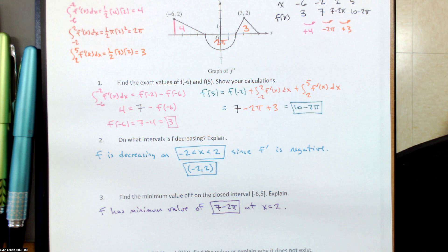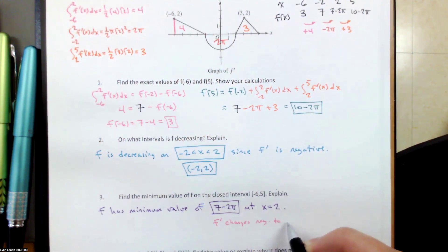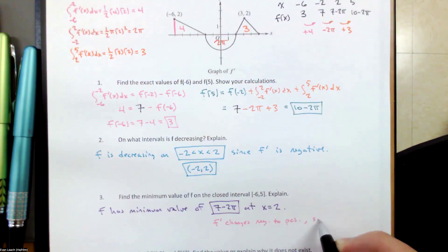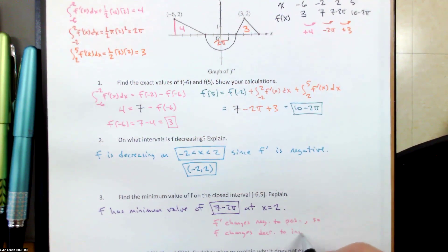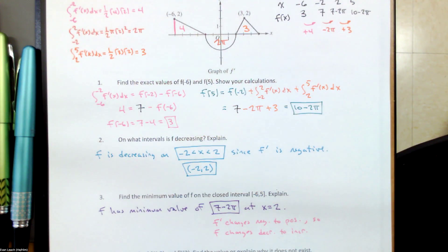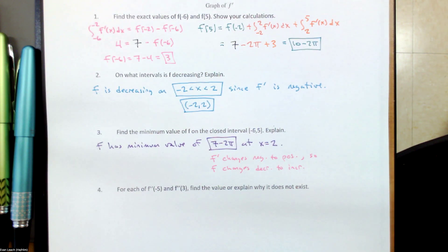At x equals 2, 2 is where the minimum happens, 7 minus 2π is the minimum value of the function. This is the lowest value that we see in the table, and we can see that on the graph because the function changes from decrease—the derivative changes from negative to positive, so the function is changing from decreasing to increasing.